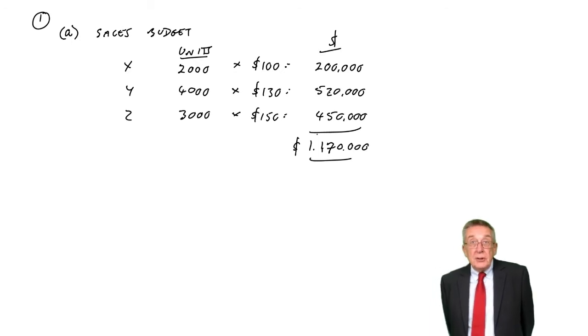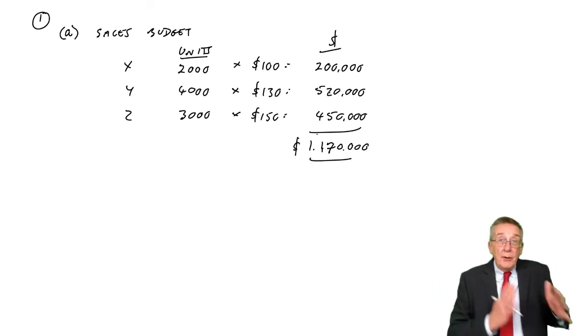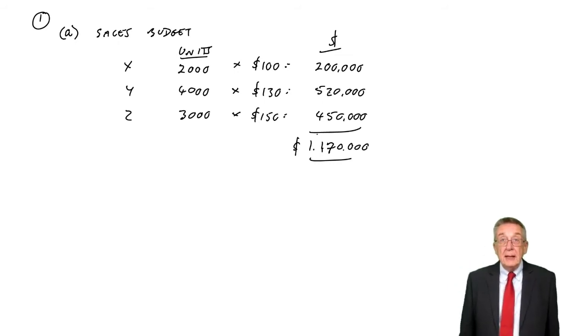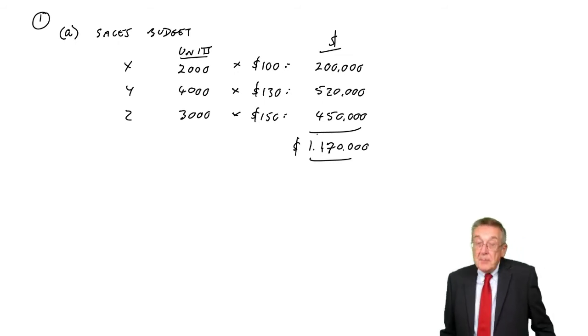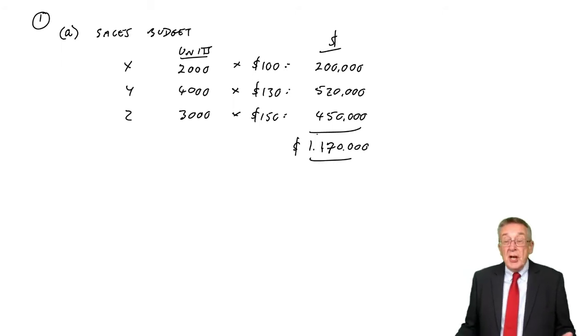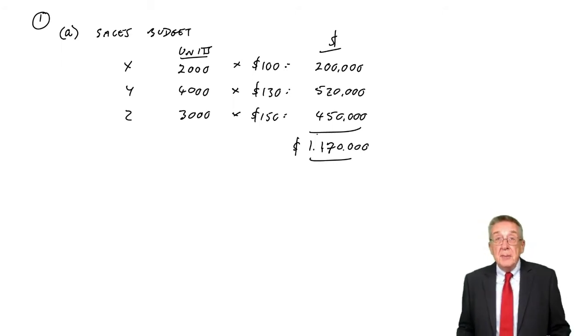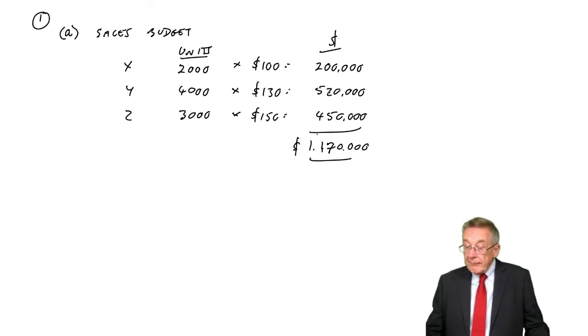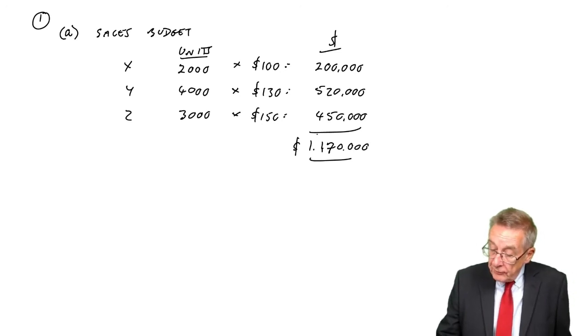So the budgeted revenue we were hoping to make is $1.17 million. Our managers will need that. They'll need to know how many we want them to sell and at what selling price. Ultimately, we would produce a budgeted profit statement with our budgeted revenue of $1.17 million.